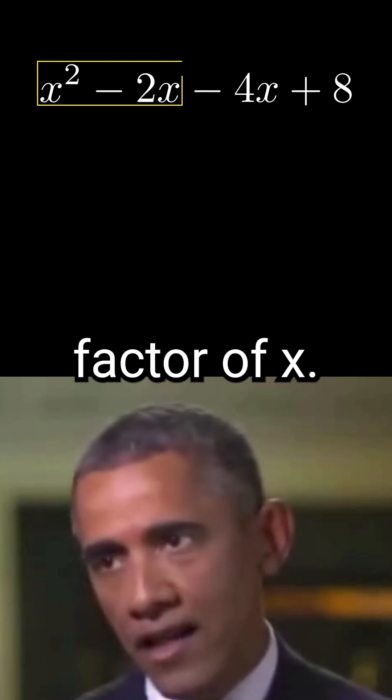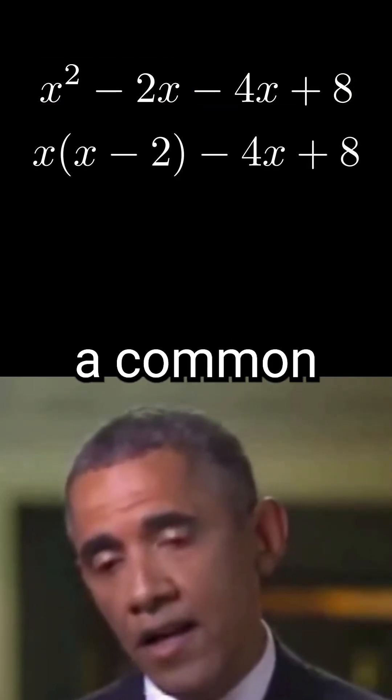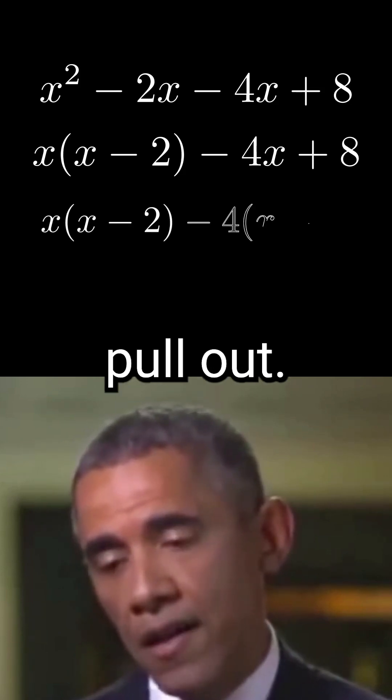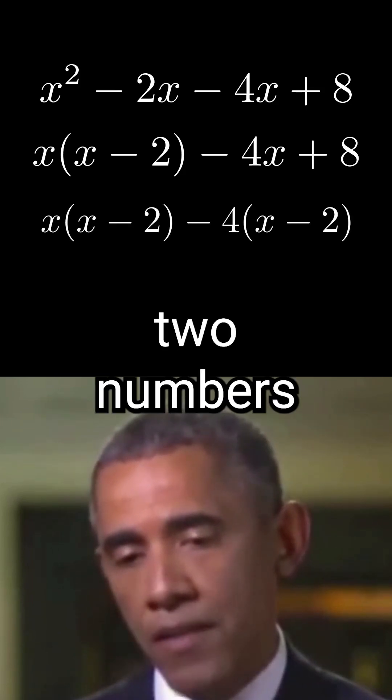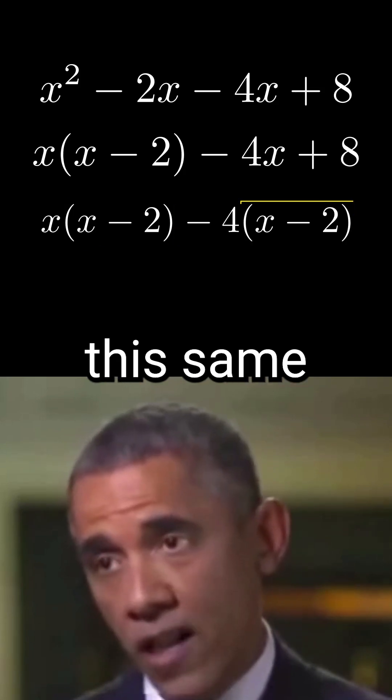These first two terms have a common factor of x. We pull that out by dividing terms by x. Then these next two terms have a common factor of negative 4, which we also pull out. Now look at what we have. We have two numbers that are being multiplied by the same thing, x minus 2. So we can actually factor this same thing out of them.